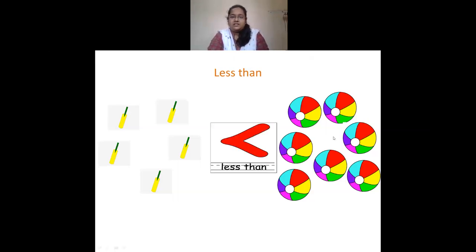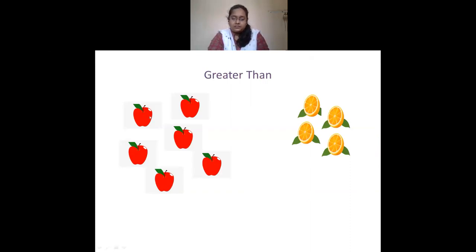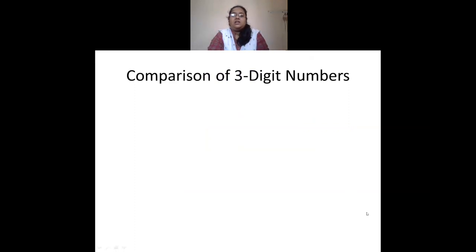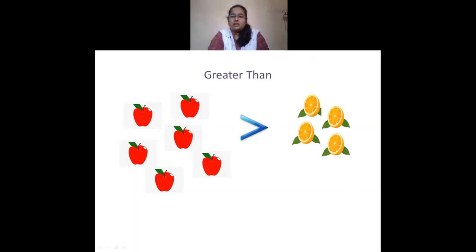Then we had greater than. Here I have 6 apples and 4 oranges. The number of apples is greater than the number of oranges, so this is the greater-than sign. To remember the sign, put 2 dots on the greater side and 1 dot on the lesser side, then join those points.